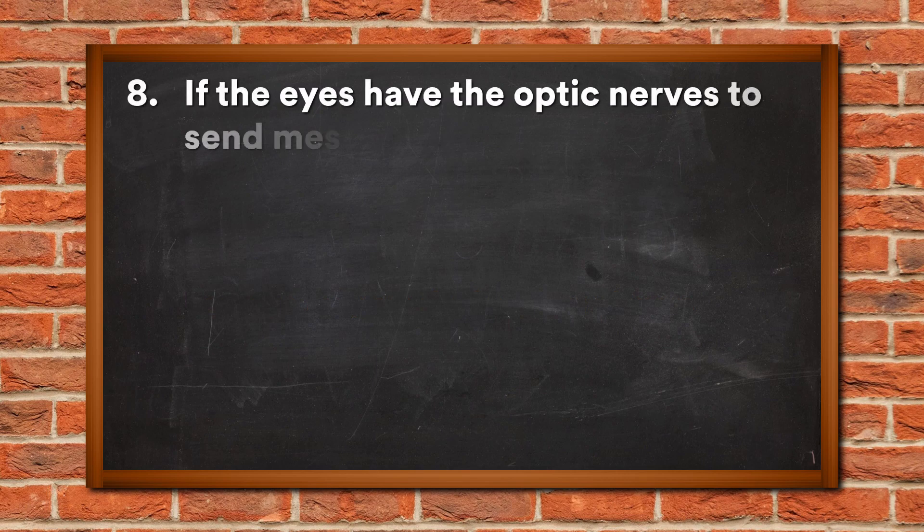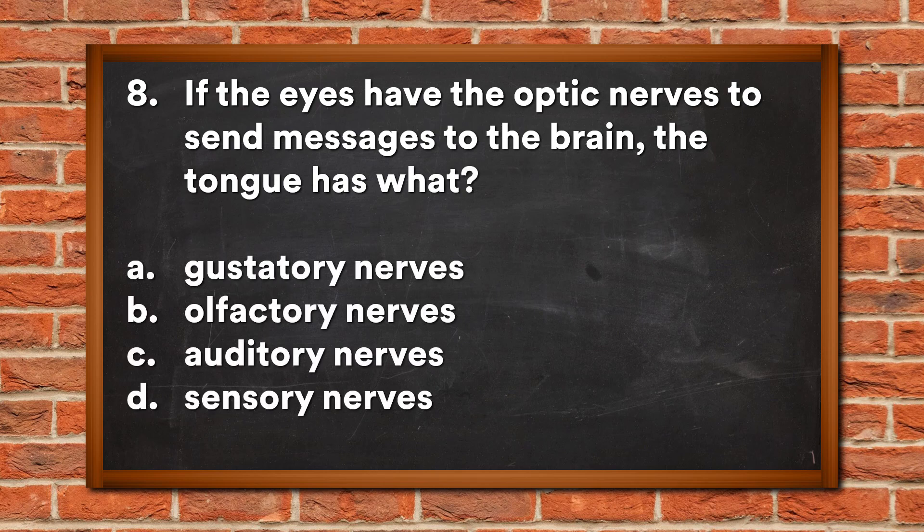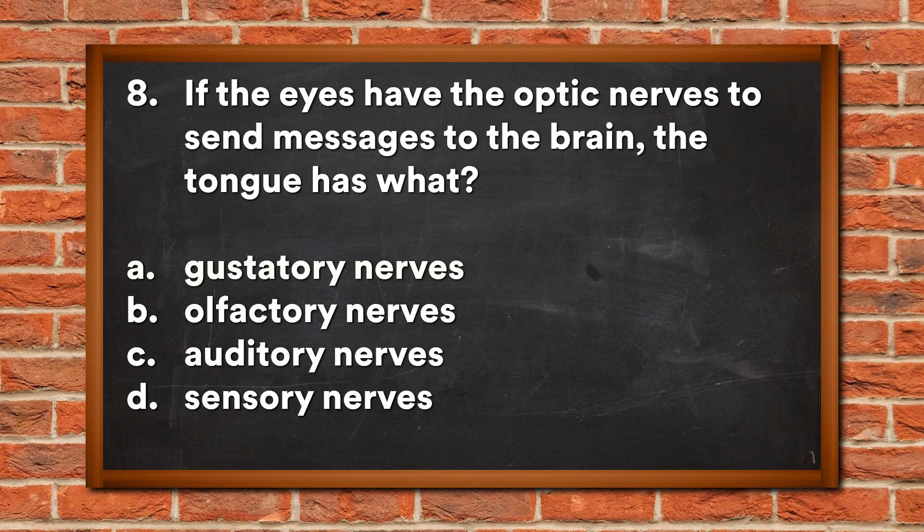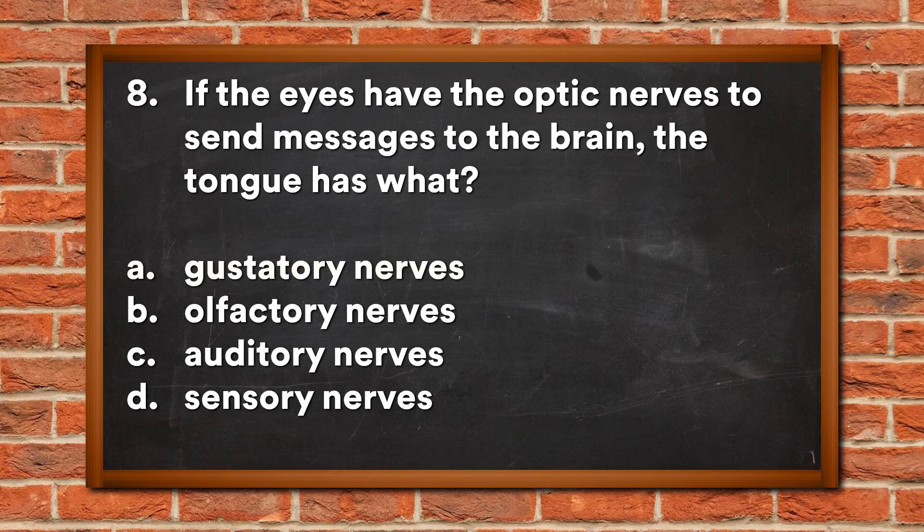Question 8: If the eyes have the optic nerves to send messages to the brain, the tongue has what? A. Gustatory nerves, B. Olfactory nerves, C. Auditory nerves, D. Sensory nerves. The answer is A, Gustatory nerves.